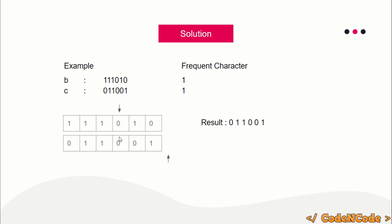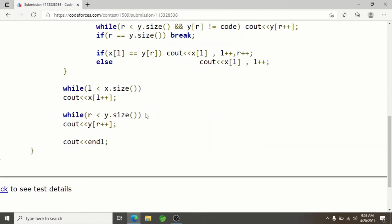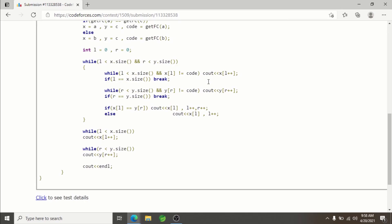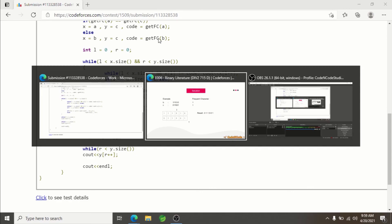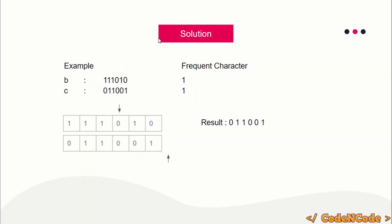I'll be providing the solution in the description of the video so you can go through it yourself. The function get_fc returns the frequent character for a string. I hope you're able to understand the solution. If you still have any query, post it in the comment section. Thank you guys for watching, and till the next video drops, keep coding!